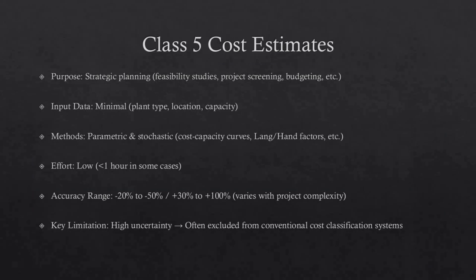Class 5 estimates are generally prepared based on very limited information and subsequently have wide accuracy ranges. Some companies and organizations have elected to determine that due to the inherent inaccuracies, such estimates cannot be classified in a conventional and systemic manner. Class 5 estimates may be prepared within a very limited amount of time, sometimes requiring less than an hour. Often, little more than proposed plant type, location, and capacity are known. They are prepared for purposes such as market studies, assessment of initial viability, evaluation of alternate schemes, project screening, project location studies, evaluation of resource needs and budgeting, and long-range capital planning.